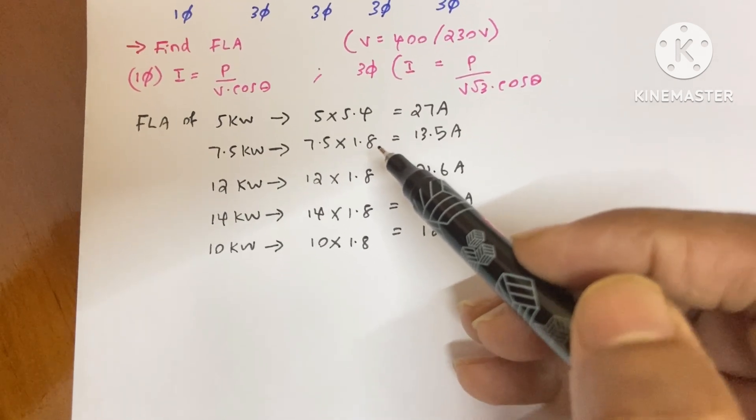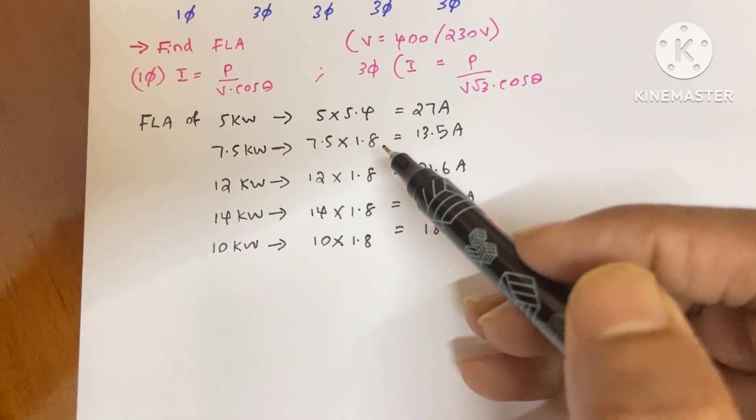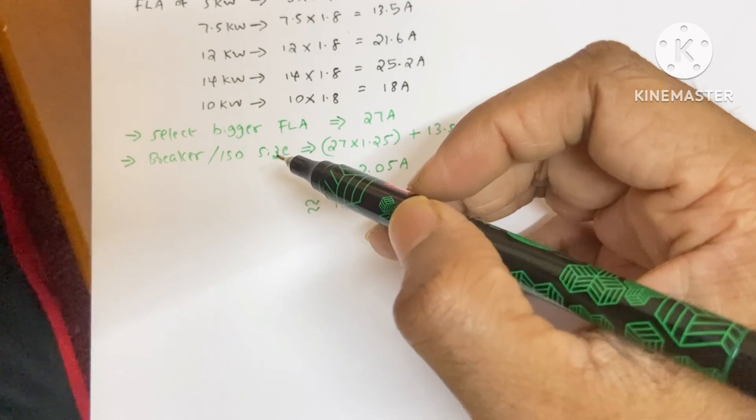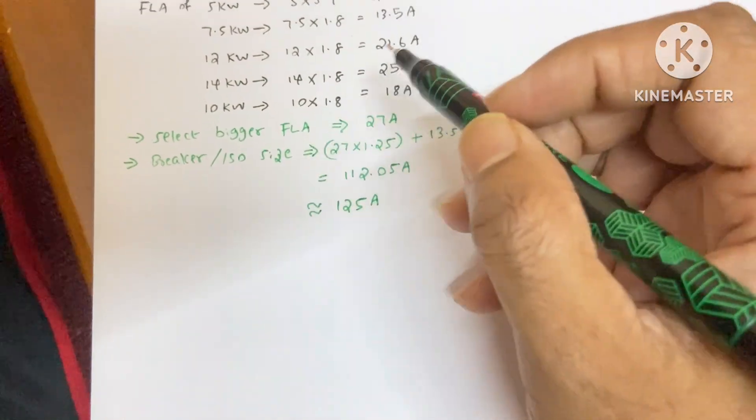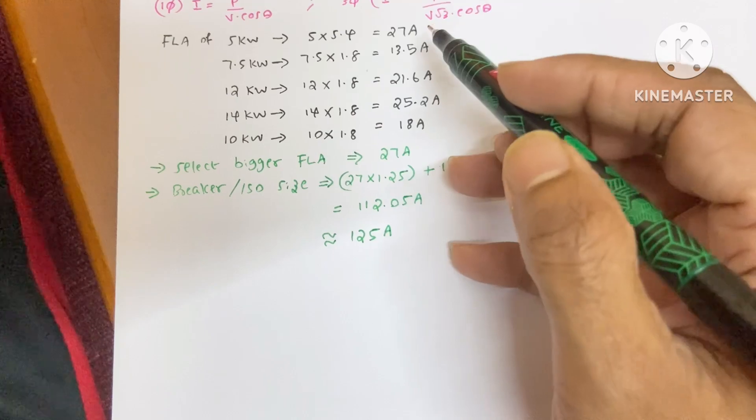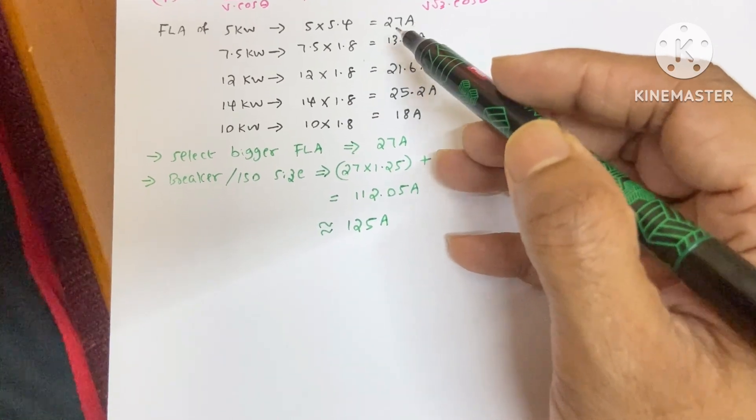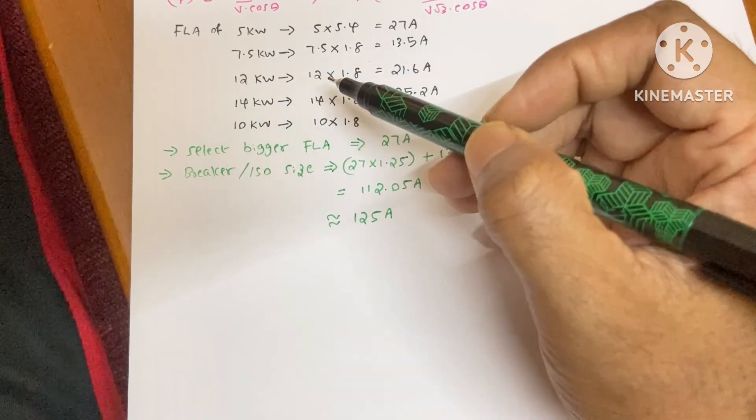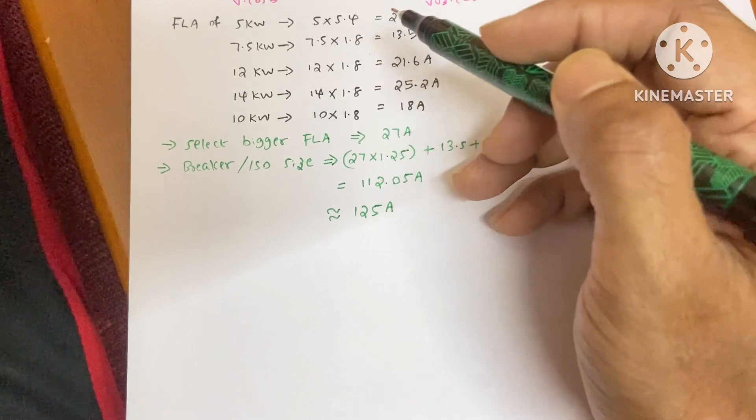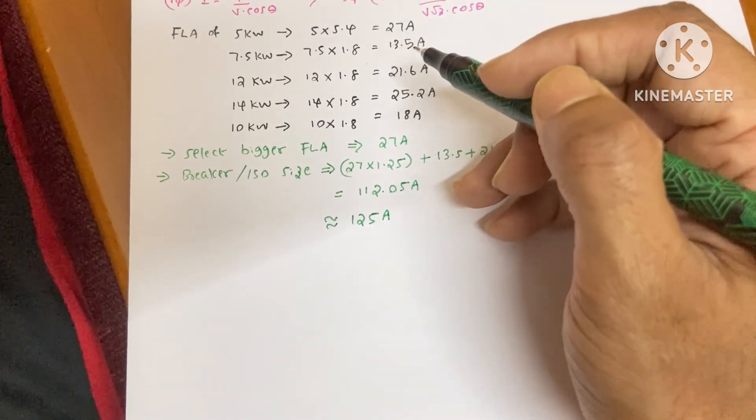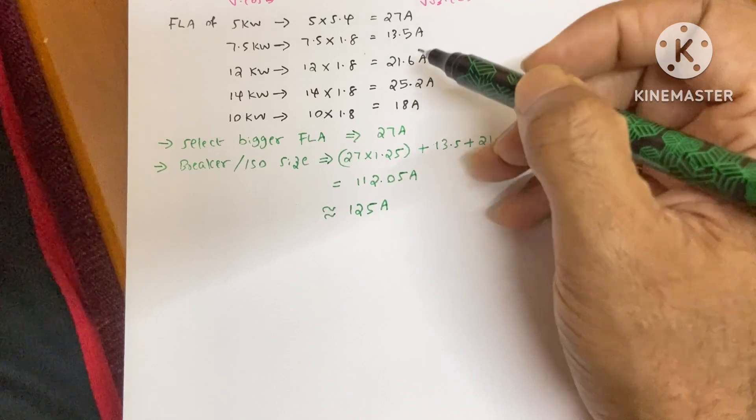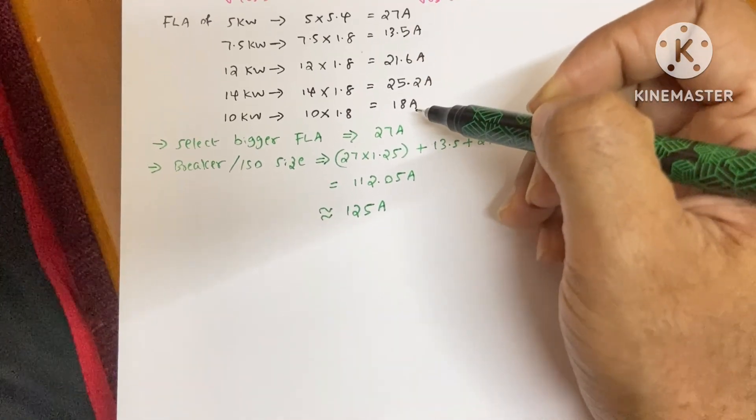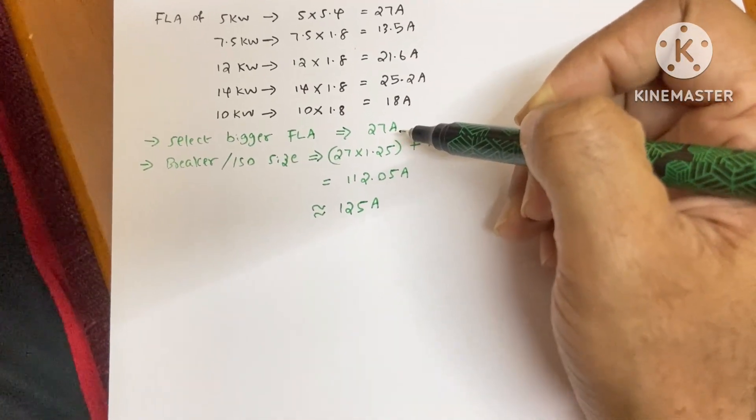The next step is select the bigger full load ampere from these values. From these values, the bigger one is 27 ampere. If the motor is single phase or three phase, it does not cause any problem. We just need to find the bigger full load ampere from this one. Now 27 ampere is the bigger one.